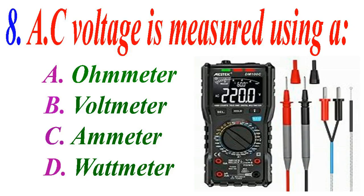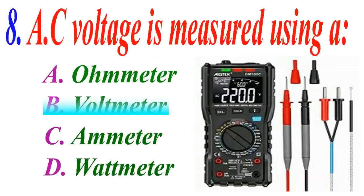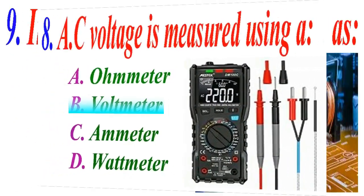AC voltage is measured using: A ohm meter, B volt meter, C ammeter, D watt meter. The correct answer is B volt meter.